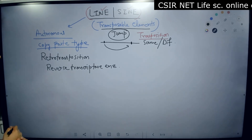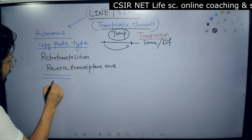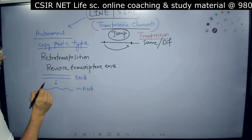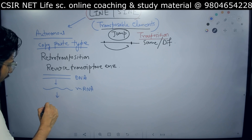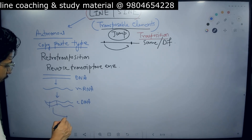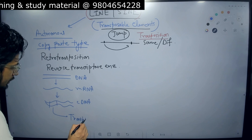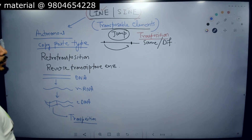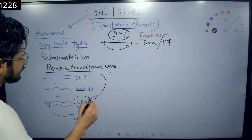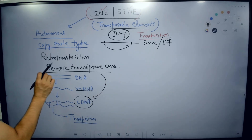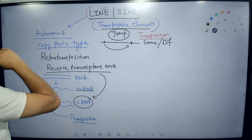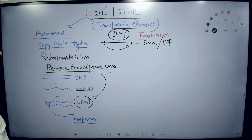Why do they need reverse transcriptase enzyme? Because we have the DNA. From DNA, first they will make mRNA, and using this mRNA, we make a copy of the complementary DNA. This complementary DNA is then used for the purpose of transposition. That is why we require conversion of complementary DNA from RNA, and for this purpose we need reverse transcriptase enzyme converting mRNA into complementary DNA. So these LINEs are autonomous transposable elements in the eukaryotic genome.